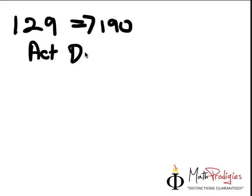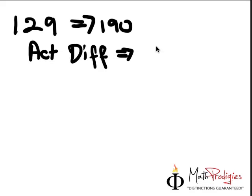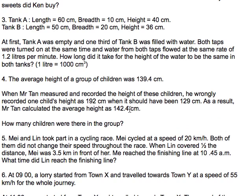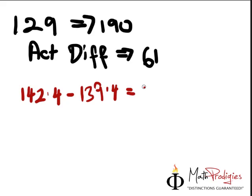Actual difference is 190 minus 129. So 190 minus 129 gives me 61 marks. But what is the average difference? The average difference is 142.4 minus 139.4. So instead of actually getting 139.4, he actually got 142.4. So when you minus, you get the average difference, which is what? 3cm, right? Yeah, 3cm. But the actual difference is 61cm.